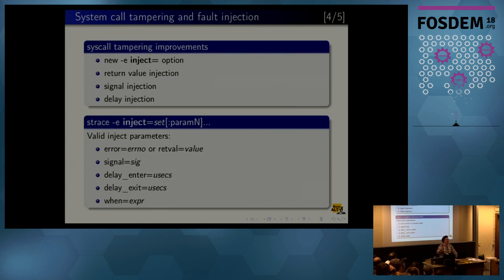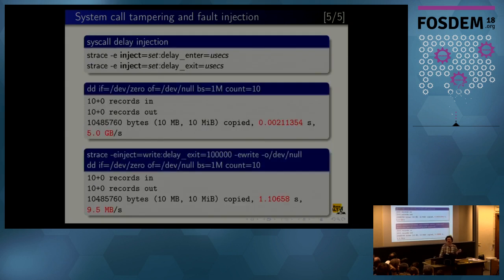We implemented more features in this direction. There is a new option called inject that can inject not just faults to syscalls but other kinds of things like signals to syscall invocations, or other kinds of return codes that are not that useful, and also delay injection. This is a quite new feature, it's not yet merged. You can inject delays in invocations on entering syscall and exiting syscalls.